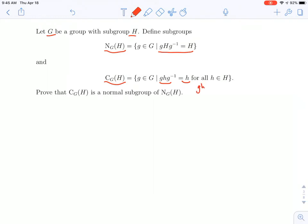Alternatively, you could say this means gH equals Hg for all h in H. And it's reasonably clear that if something centralizes H, that means if you conjugate each element and you get back the same element, then when you conjugate H as a whole, you must get back H as a whole. So the centralizer of H is a subgroup of the normalizer.